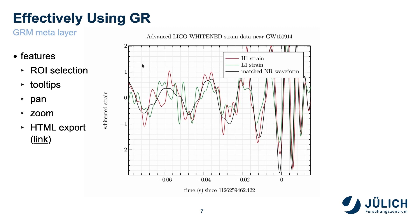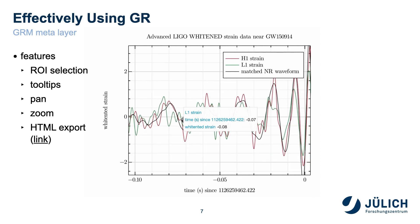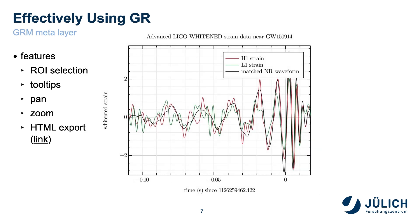The famous LIGO example was transferred to Julia and started in a Jupyter notebook with the GR meta layer. As a backend, we used JavaScript in this case. By long-pressing the mouse button, a region of interest can be selected. If you move over the data points, tooltips are displayed. These can also be customized via callbacks. You can adjust the viewing area of the plot by zooming and panning. Special attention is paid to HTML export — the notebook, including the JavaScript environment, can be exported to an HTML file, and the interactive elements are still available in the exported document.